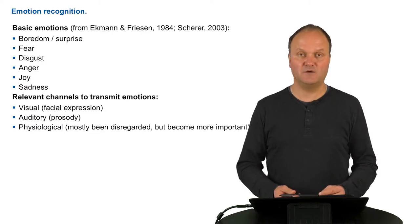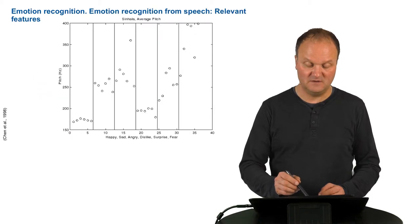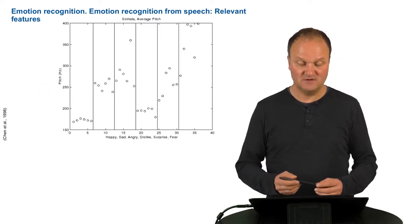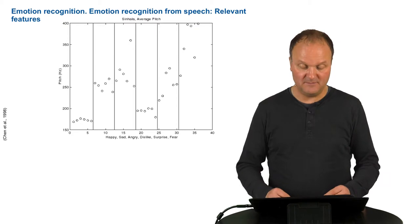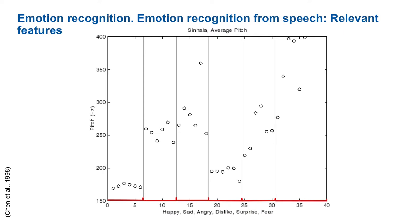We will now concentrate on the visual and auditory features which can be used to recognize emotions. Here you see an example of the pitch frequency — that is the fundamental frequency, or the perception of the fundamental frequency of the voice — for the different classes of emotions extracted from a corpus of relevant speech, separated into happy, sad, angry, dislike, surprise, and fear emotions.